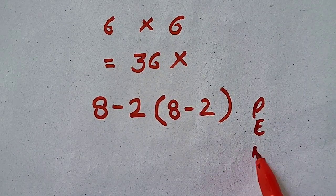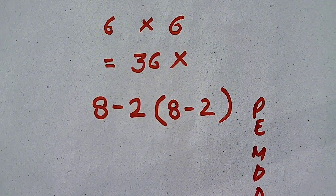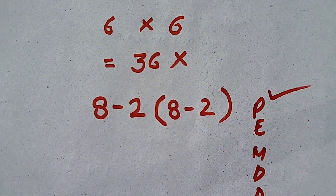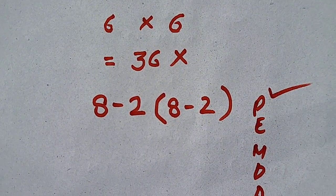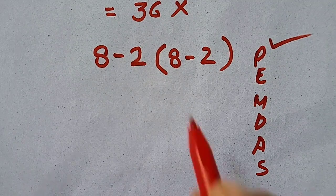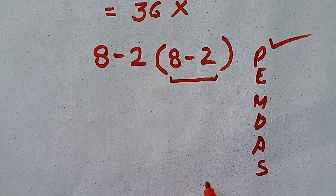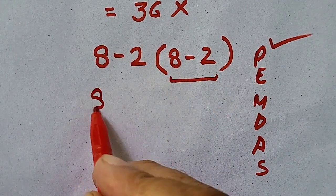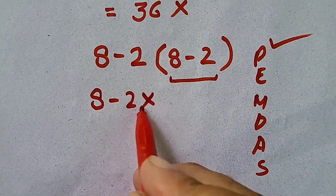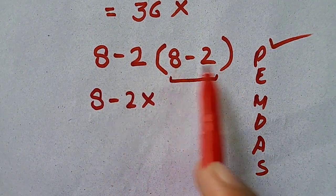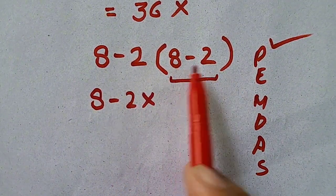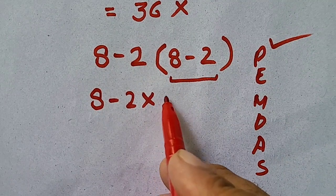first of all, we have to solve parenthesis. So parenthesis have 8 minus 2. So 8 minus 2 times 8 minus 2, which is in parenthesis. Now we will get 6.